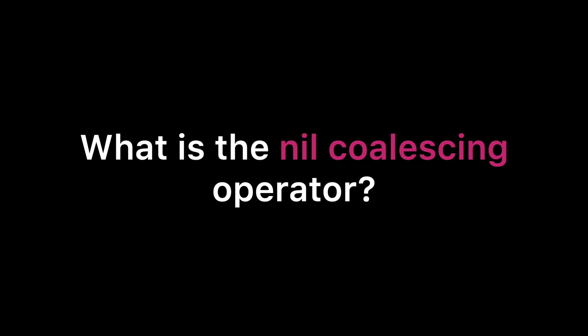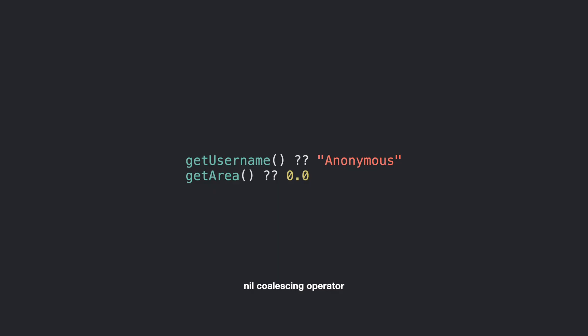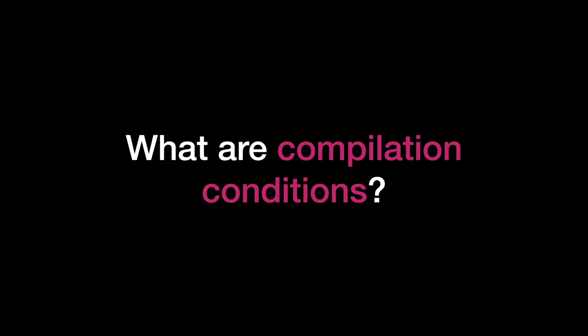What is the nil coalescing operator? This is a fairly simple question — I'm including it because I was asked this in a phone screen and while I had seen the operator, I didn't know its formal name. It's similar to a ternary operator but it simply says: if the expression on the left resolves to nil, use a backup value on the right instead. It's just a shorthand for providing a default value in case some function or property is nil.